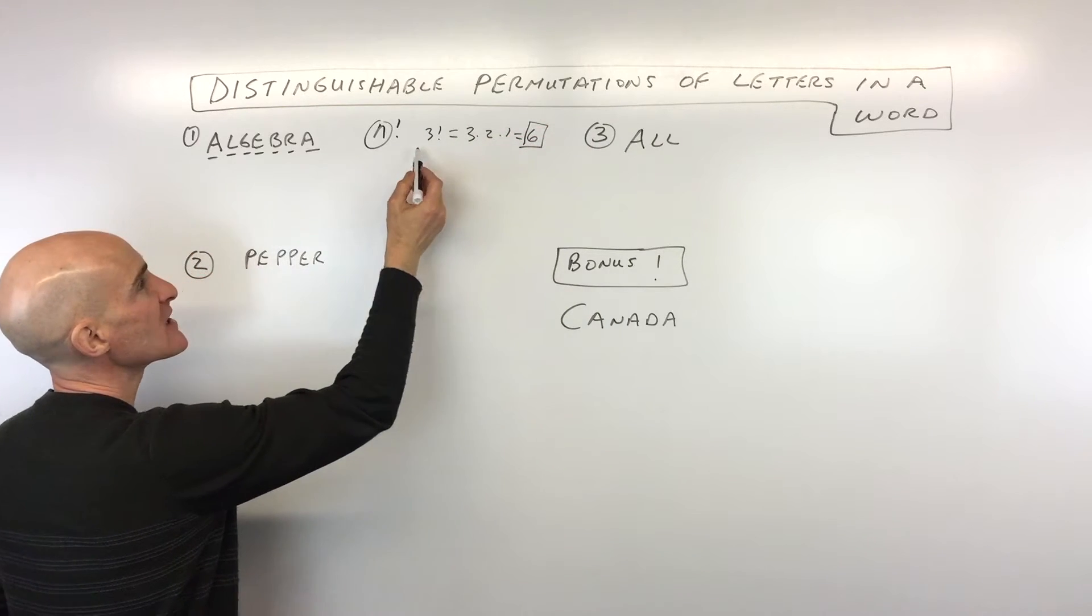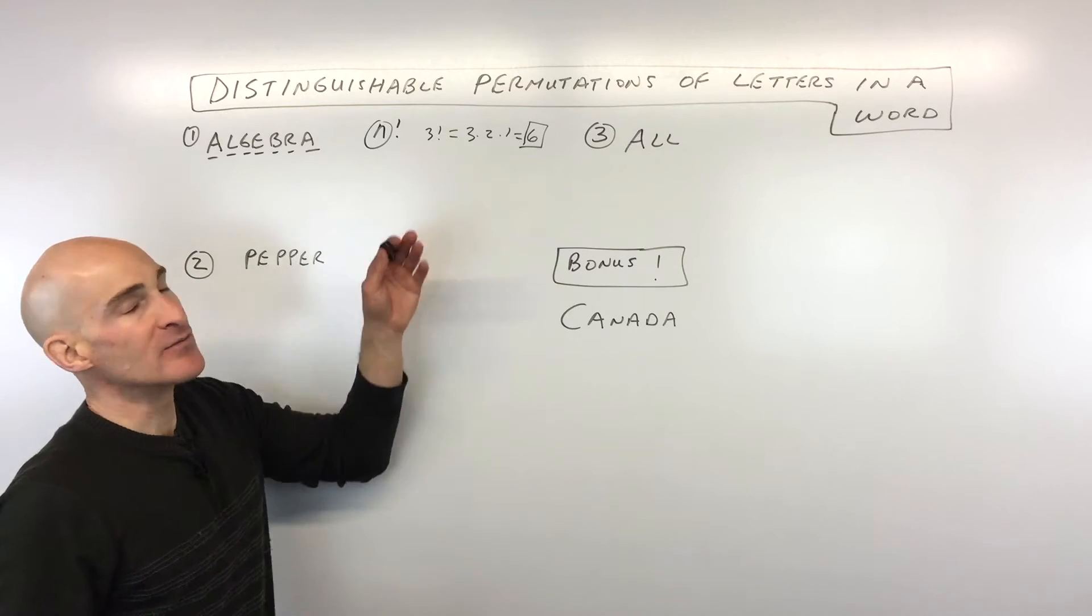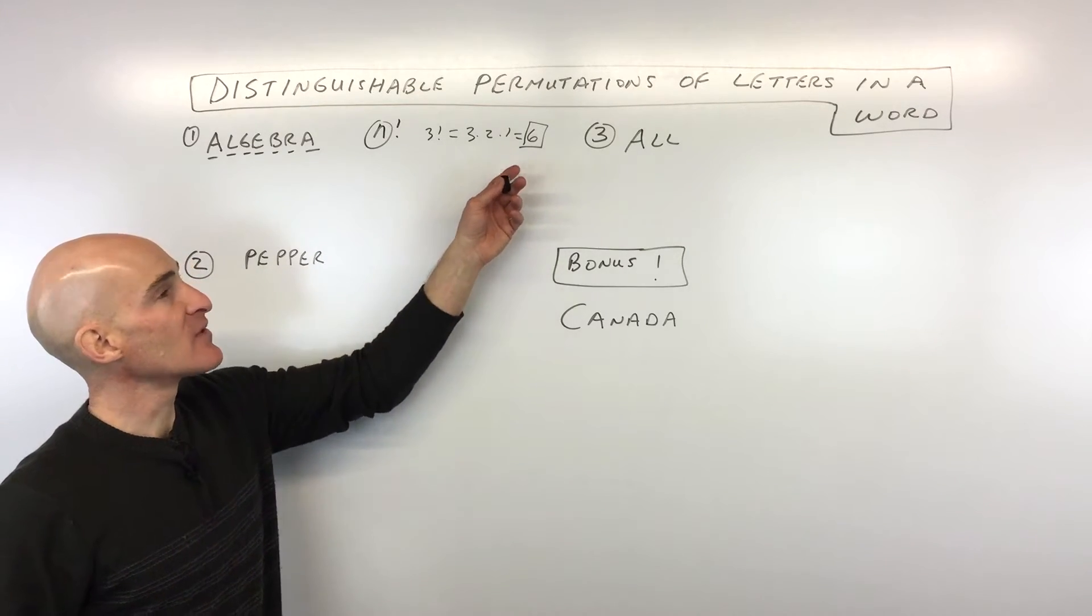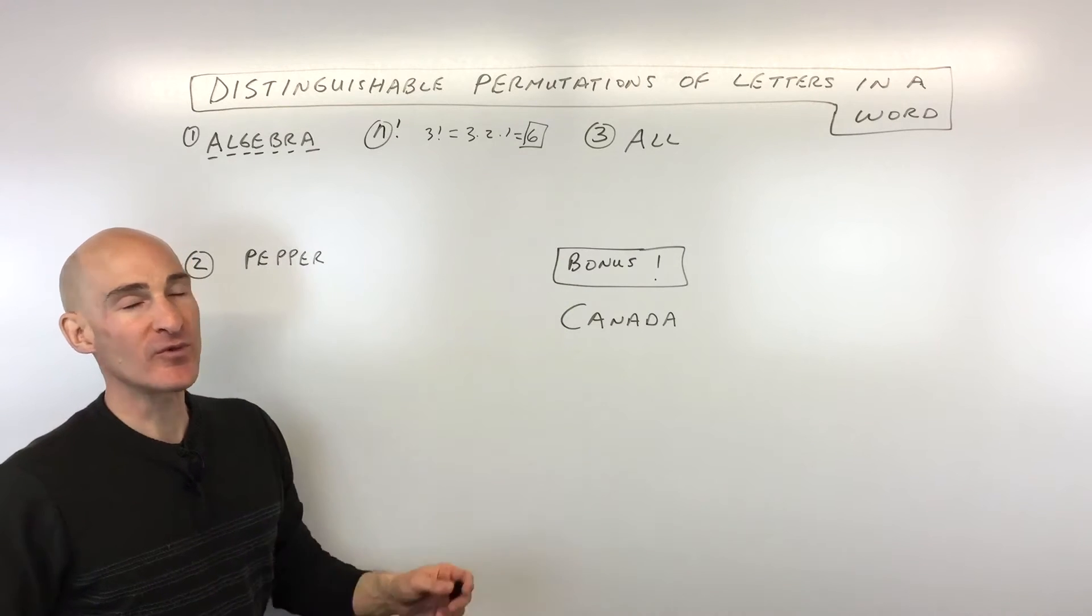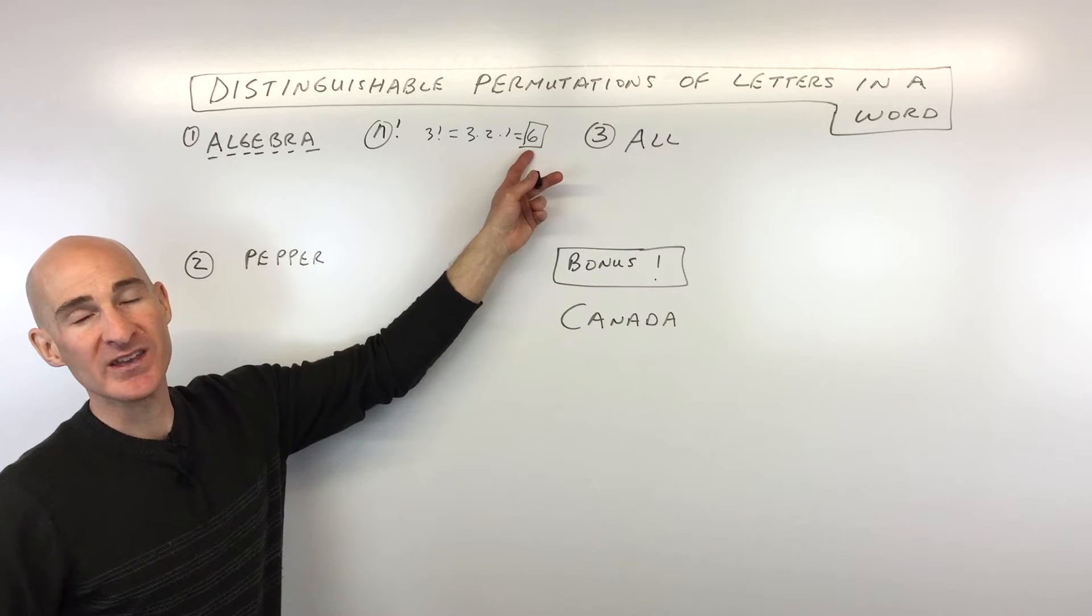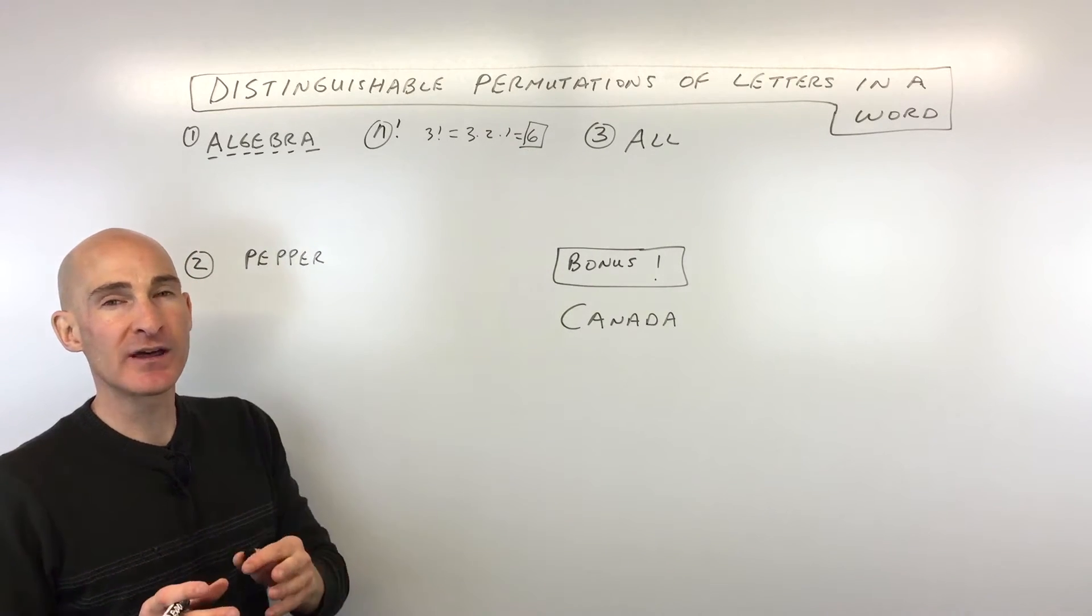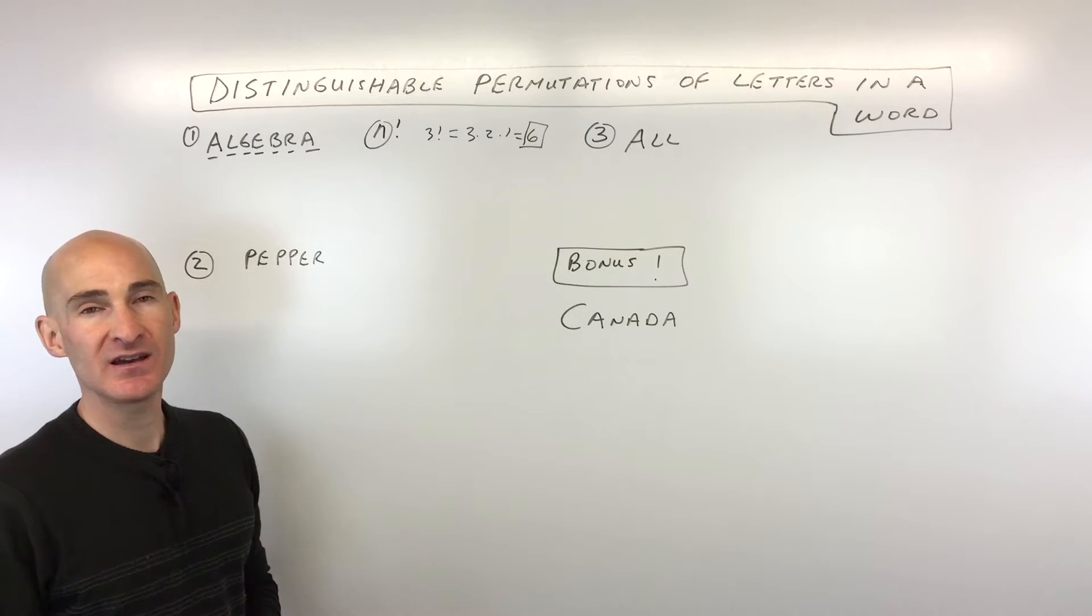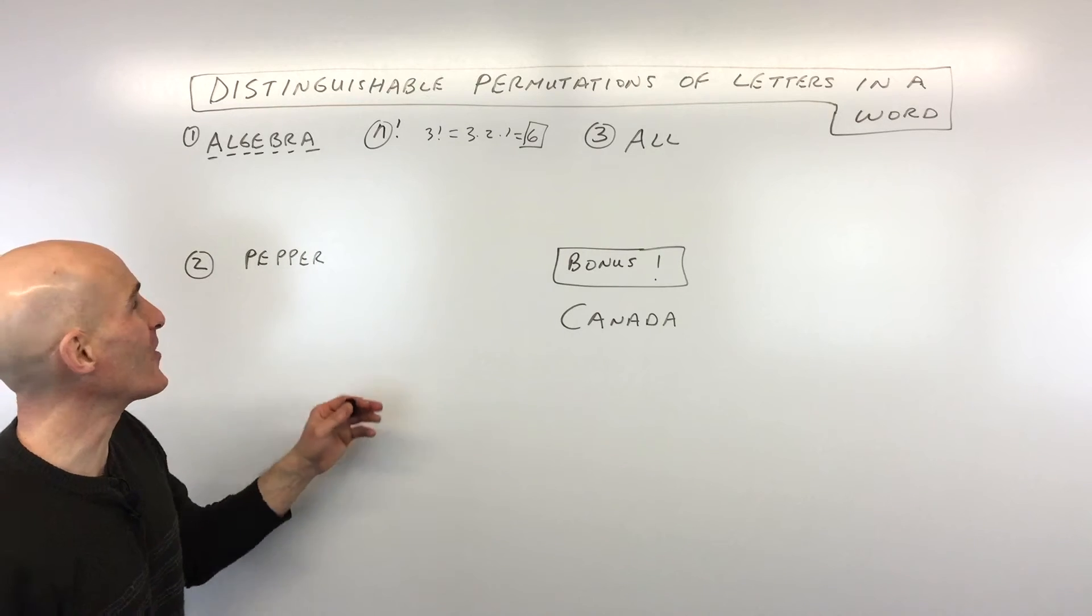So what the six represents is if you had three different items, how many different ways could you rearrange those three different items such that the order is important? So there would be six different ways to do that. And you can test that out with the letters ABC. You could do ABC, ACB, BAC, BCA, and so on. There's six different ways.